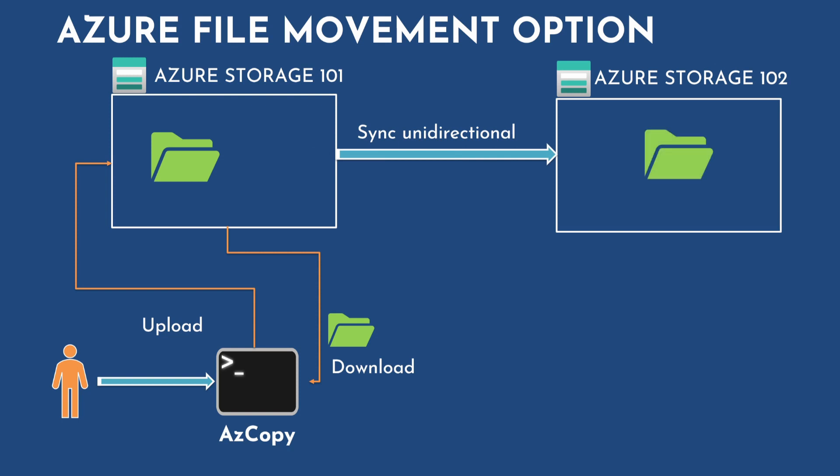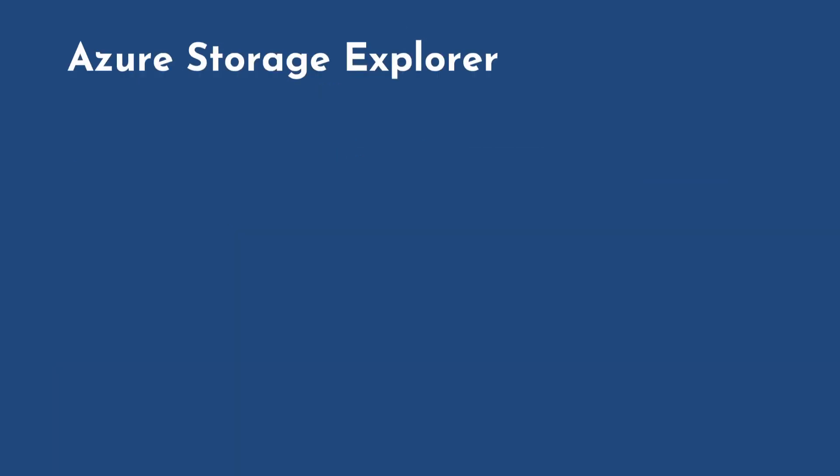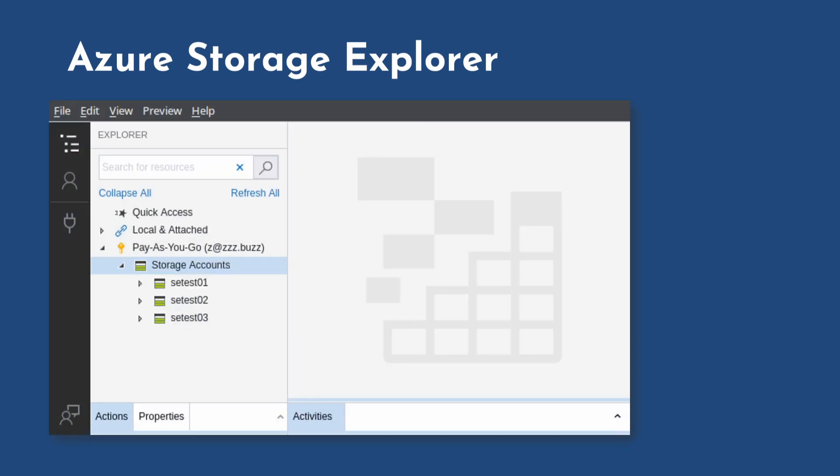You can also synchronize files between storage accounts, but the synchronization process is unidirectional — that is, one way and not bidirectional. The next tool is Azure Storage Explorer, a GUI-based application that uses the AzCopy command-line tool in the backend to perform data transfer to and from Azure storage accounts. You can simply drag and drop using the GUI without having to run AzCopy commands from the command line.